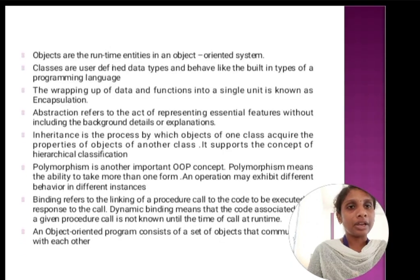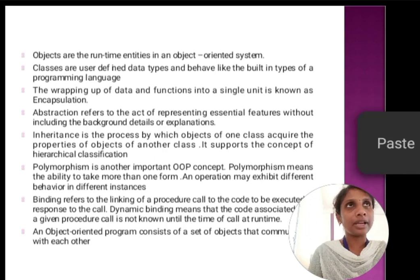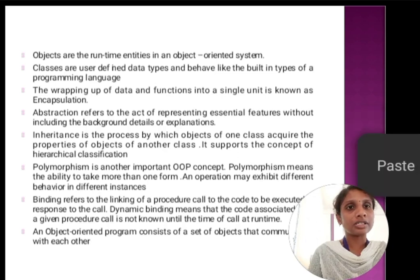Objects are the runtime entities in an object-oriented system. For example, it may be a person name, student name, account name, or places. These are the objects. And then, next concept is classes. Classes are user-defined data types and behave like the built-in types of a programming language. The classes are used to manipulate data and functions. The data and functions collectively is an object. And then, wrapping of data and function in a single unit is known as encapsulation.